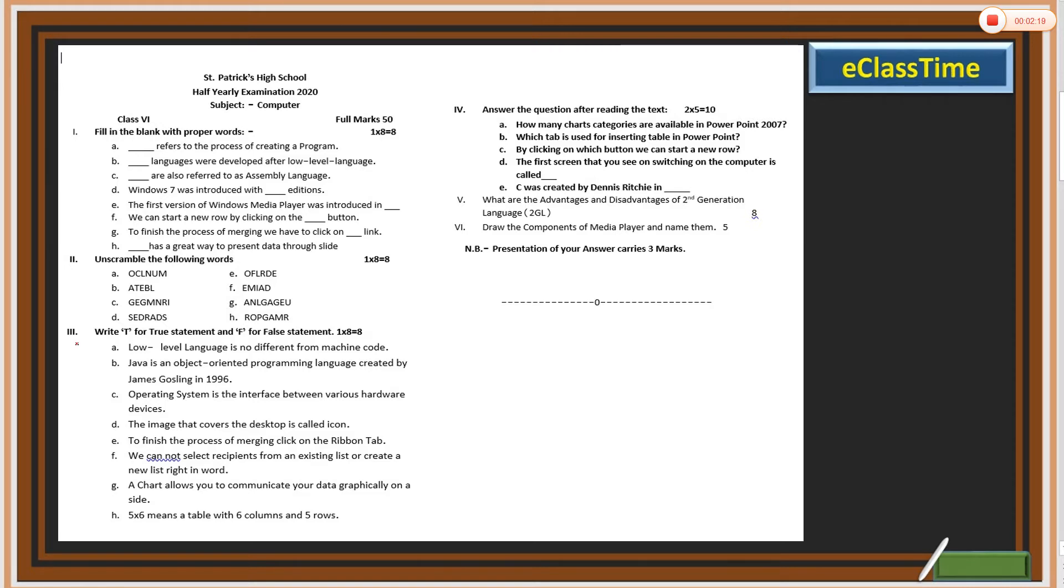Number three: write T for true statement, F for false statement. Number A: low level language is no different from machine code, whether it is true or false. Number B: Java is an object-oriented programming language created by James Gosling in 1996, true or false.